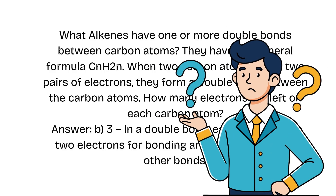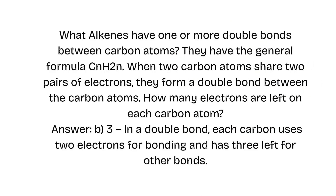Alkenes have one or more double bonds between carbon atoms. They have the general formula CnH2n. When two carbon atoms share two pairs of electrons, they form a double bond between the carbon atoms.